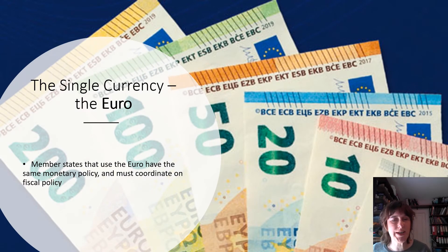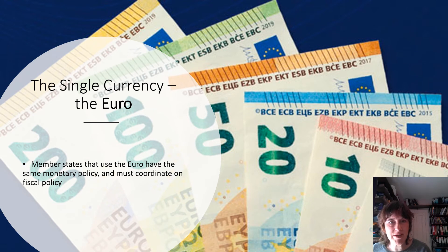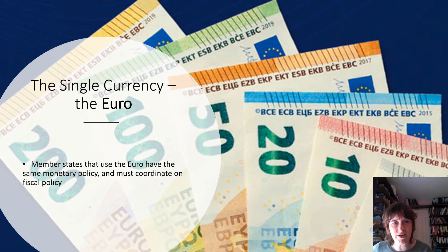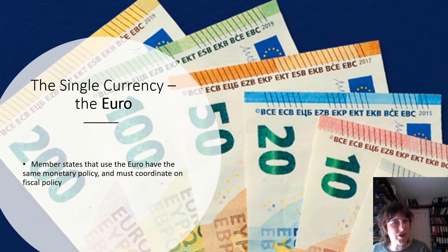Apart from the customs union and the single market, the other really important push for economic integration came from the formation of the euro. EU member states that use the euro — which is not all of them, but most of them — share a currency and therefore have a shared monetary policy, with one central bank. But they must also cooperate very strongly on fiscal policy, which is something we'll be discussing in the course. Strong cooperation results from the single currency, and of course it also increases international trade between two countries sharing the same currency, because there are no issues with foreign exchange risk or transaction costs of changing currencies.